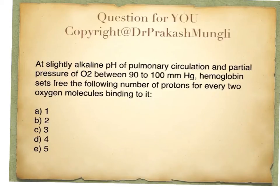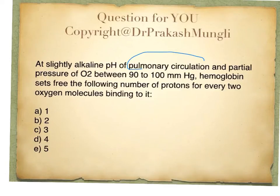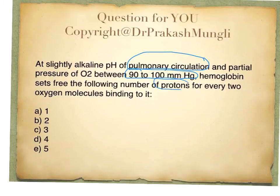The question goes something like this: at a slightly alkaline pH of pulmonary circulation and partial pressure of oxygen between 90 to 100 millimeter of mercury, hemoglobin sets free the following number of protons for every two oxygen molecules binding to it. The question is about the release of protons in the pulmonary circulation — that is, in the lungs — where the partial pressure of oxygen is 90 to 100 mmHg.